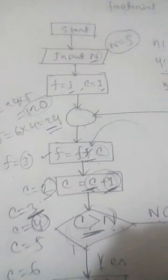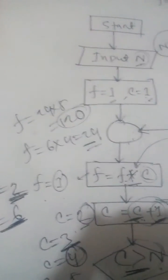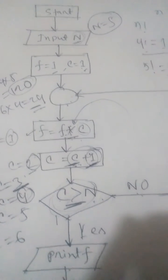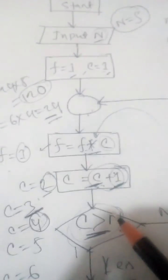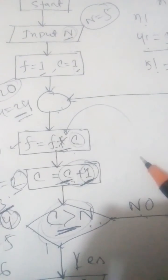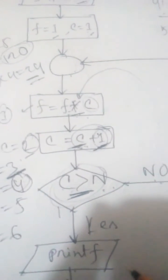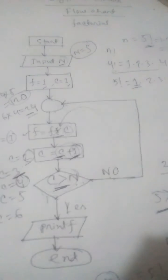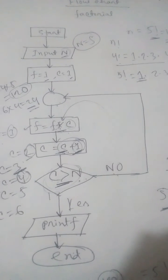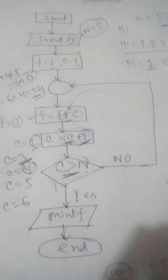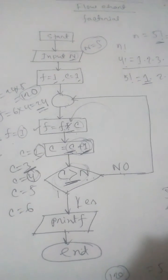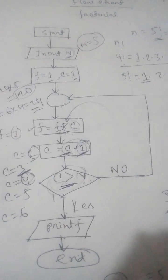I think you can understand how we get a factorial by flowchart. We input n equals 5 and we get 120 with the help of the flowchart. If we change our n value — for example, 6 factorial — the loop will repeat 6 times, then print f and we get the desired value. This is a very simple lesson on factorial using a flowchart. If you understand the flowchart, you can also implement it in C programming. Thank you very much.